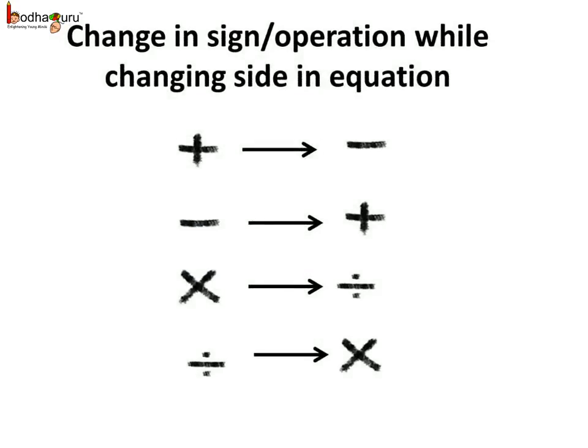And you know this is true for all the 4 basic operations of math: addition, subtraction, division and multiplication. So while solving a simple equation, when we remove a number from one side, it appears on the other side with opposite sign or operation we can say.